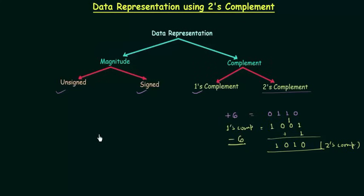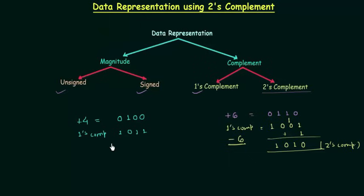We will try to understand this with one more example. Let's say we want to represent minus 4 in two's complement. So the first thing is to find out plus 4. Plus 4 is simply 0, 1, 0, 0. Now we will take the ones complement of 0, 1, 0, 0, which gives 1, 0, 1, 1. And we will add 1 to it to obtain the two's complement, giving us 1, 1, 0, 0. So 1, 1, 0, 0 is the two's complement of plus 4.